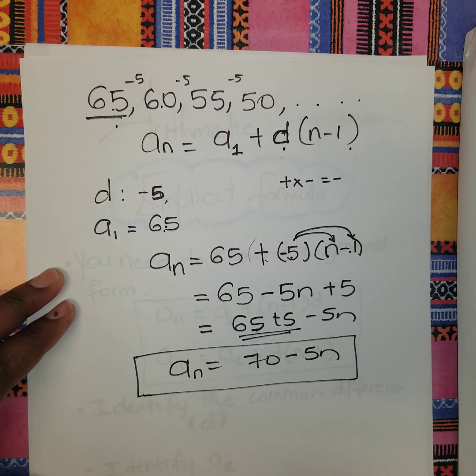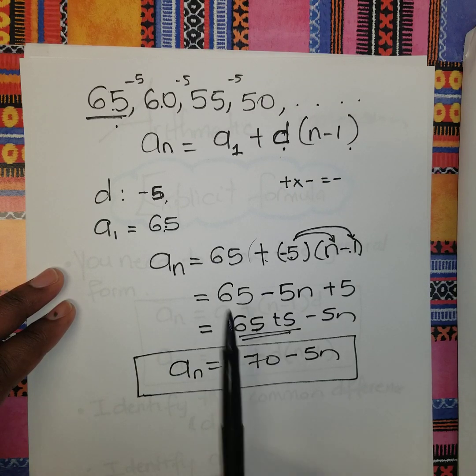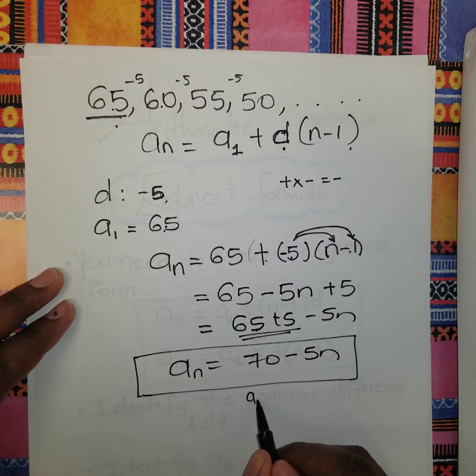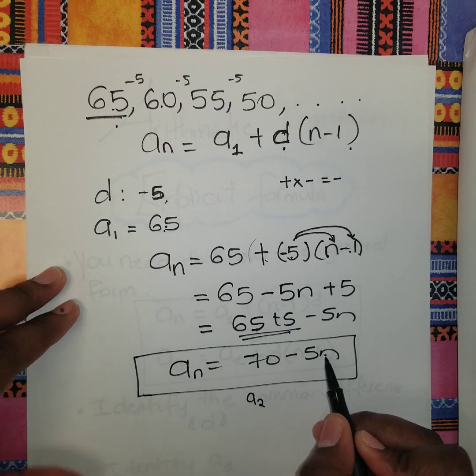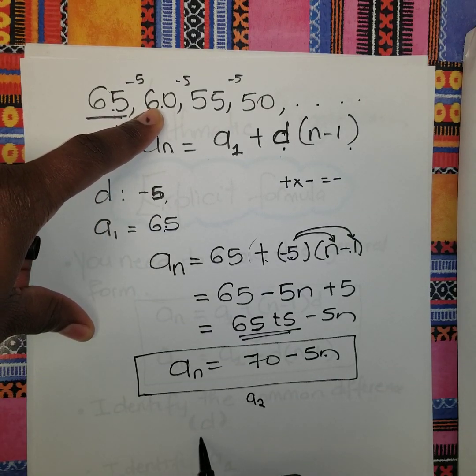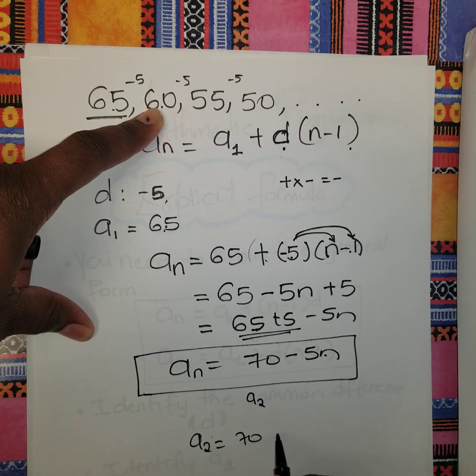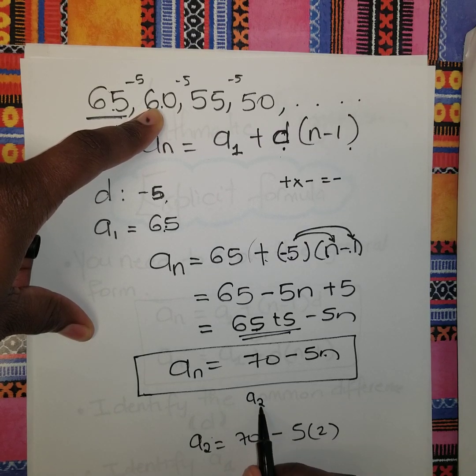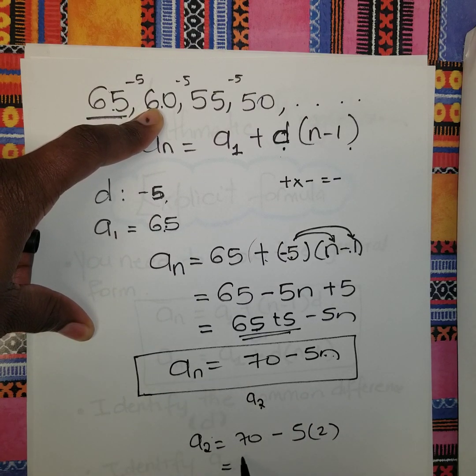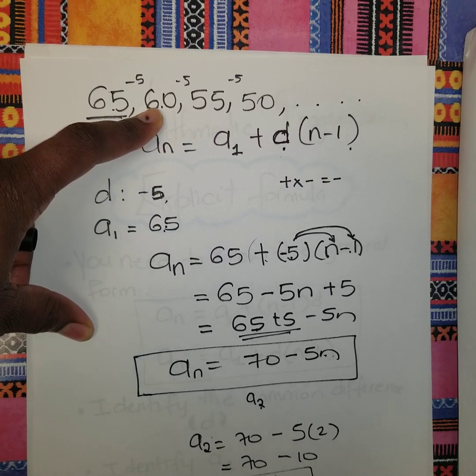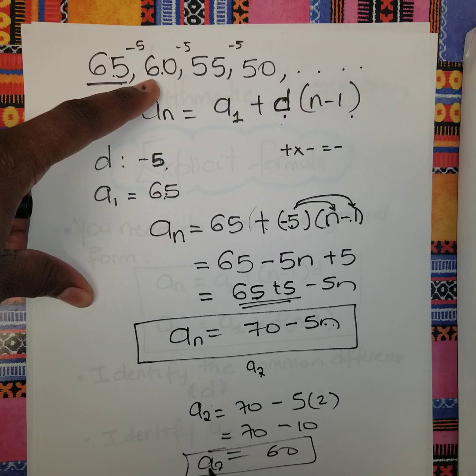Let's find a_2, the second term. If I put 2 in this equation, I should get 60. So a_2 = 70 - 5(2). Why 2? Because n represents the term you're finding. 70 - 10 = 60. See, a_2 is 60, so it's proven correct. Let's do another example.